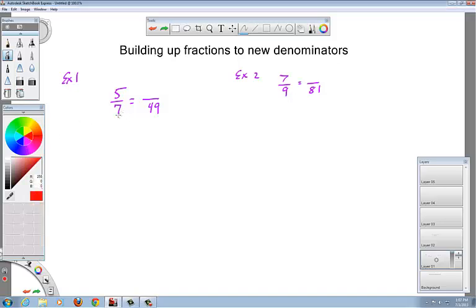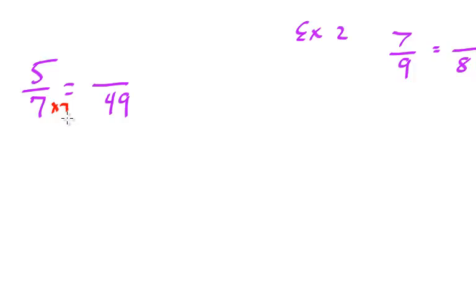You say to yourself, what do I multiply 7 by to get 49? And that is of course 7 because 7 times 7 is 49. So you multiply the top by that 7 too and get 35. I know of no other slicker, easier way to do that.